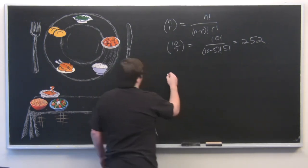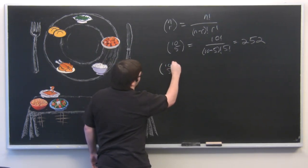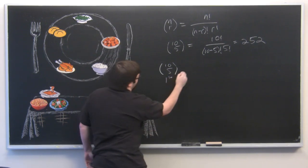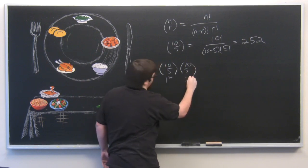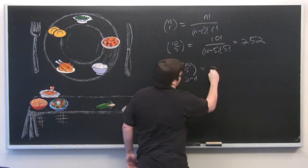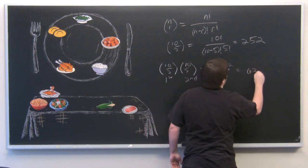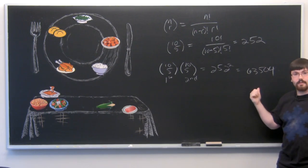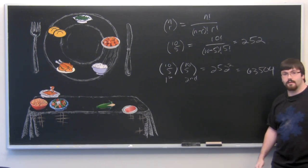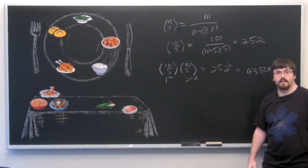If I just treat it like the first time and I pick any of the five items from those ten, then what we have is that we have ten choose five again, and that was our first, times another ten choose five for our second plate, which ends up being 252 squared, or 63,504. 63,504 different Thanksgiving dinners you could have if you just go out for any five items out of the ten each time.